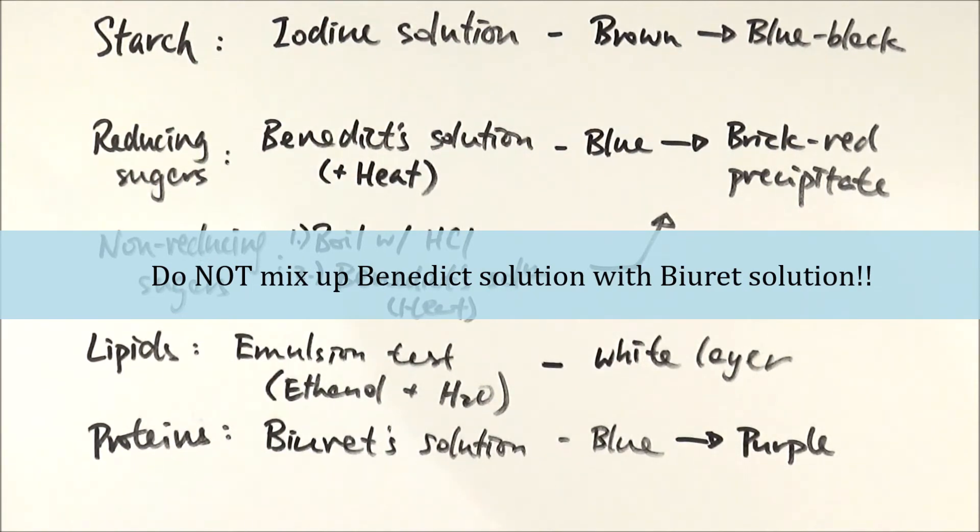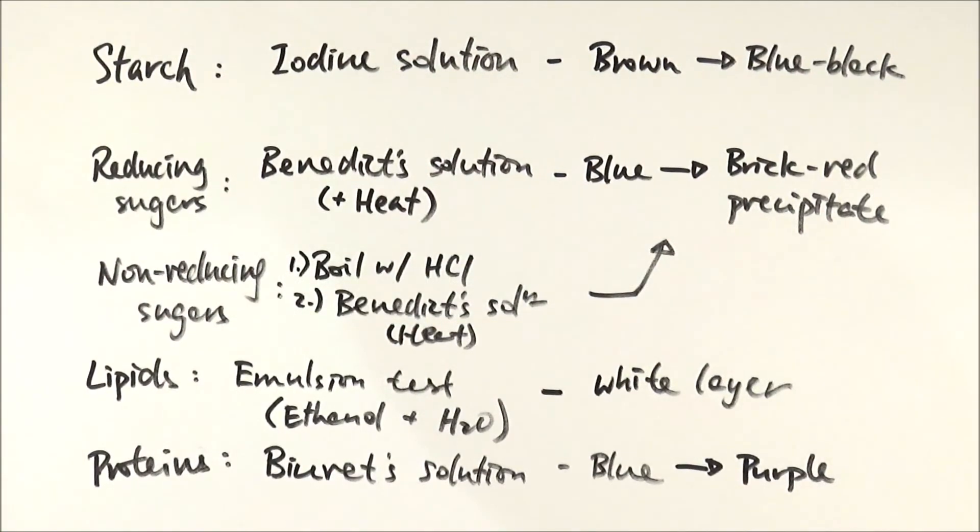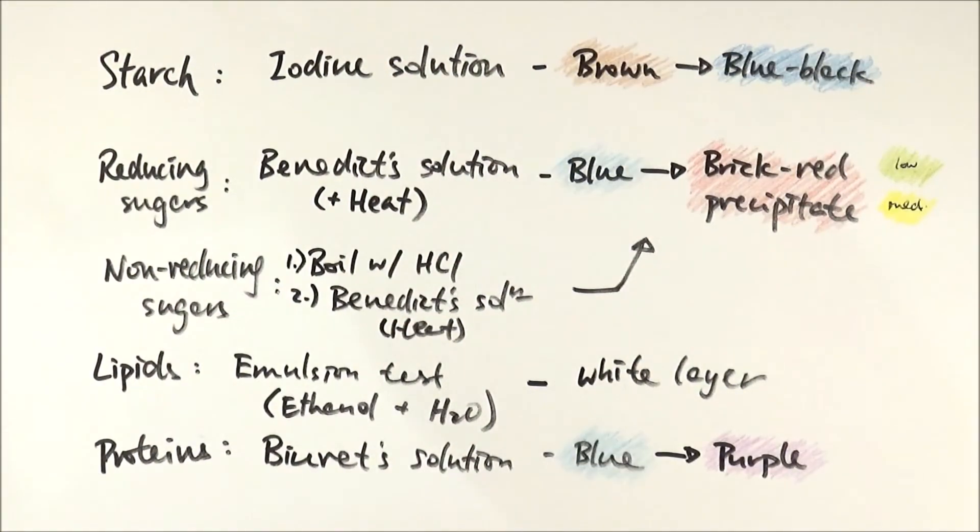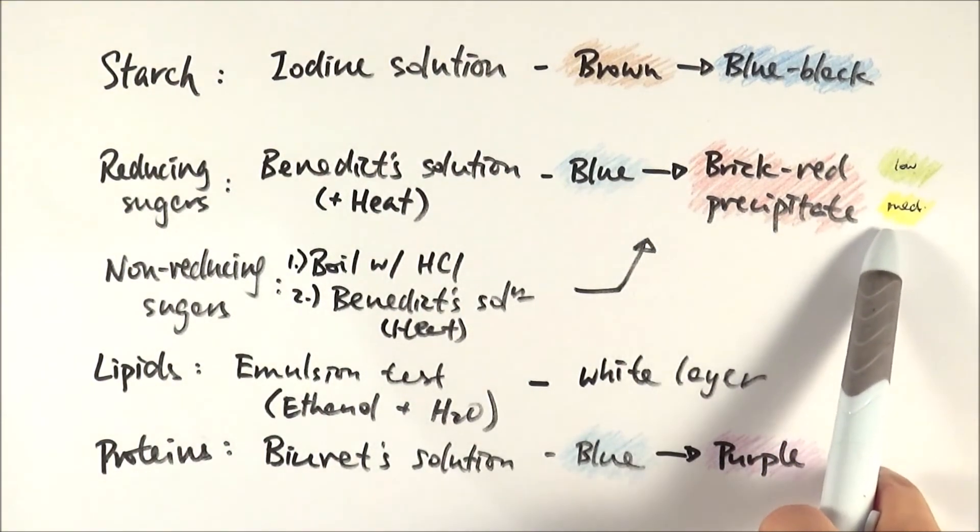For a quick summary: to test for starch, you use iodine solution or iodine dissolved in potassium iodide, and it goes from yellow-brown to blue-black. To test for reducing sugars such as glucose, you use Benedict solution, heat it with the sample, and it goes from clear blue to brick-red precipitate. Low concentration produces green, medium concentration yellow, high concentration brick-red.